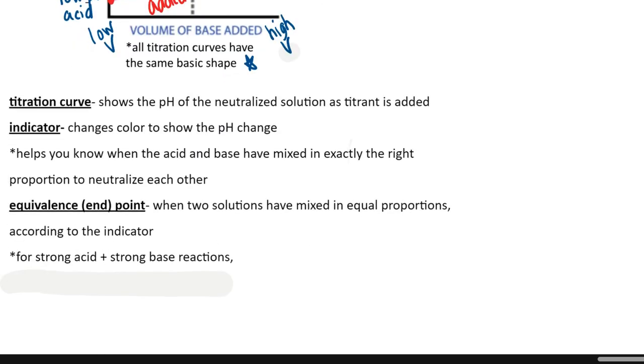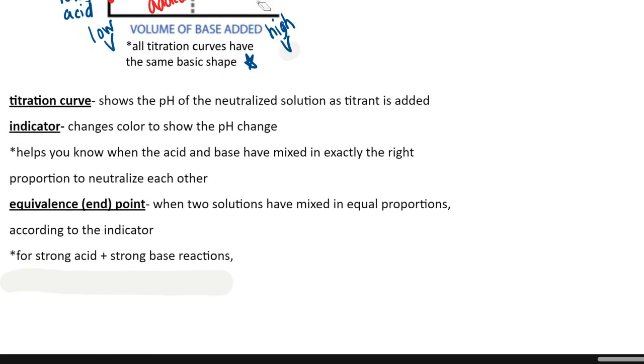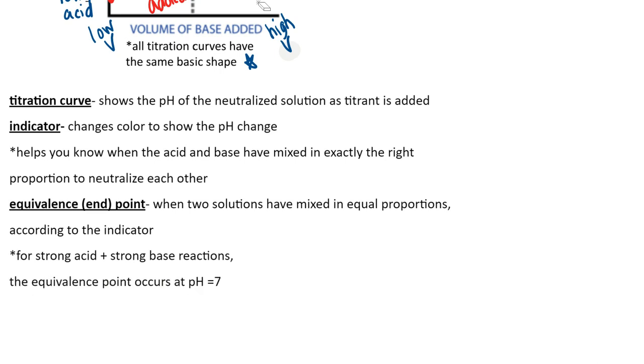When you combine strong acids and bases, the goal is that the equivalent point occurs perfectly at seven, because that is the neutral pH. All right, that's everything you need to know about titrations. Good job everybody.